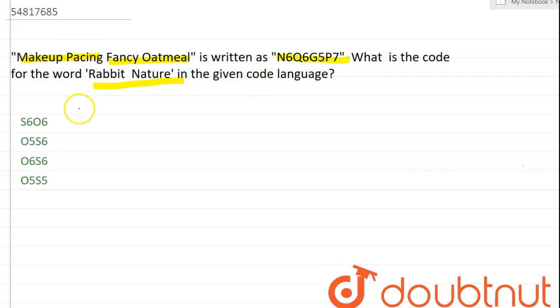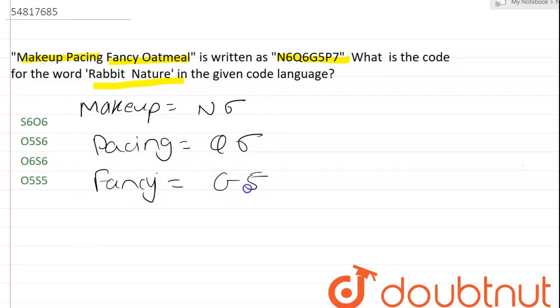Makeup is written as N6, pacing is written as Q6, fancy is written as G5, and oatmeal is written as P7.